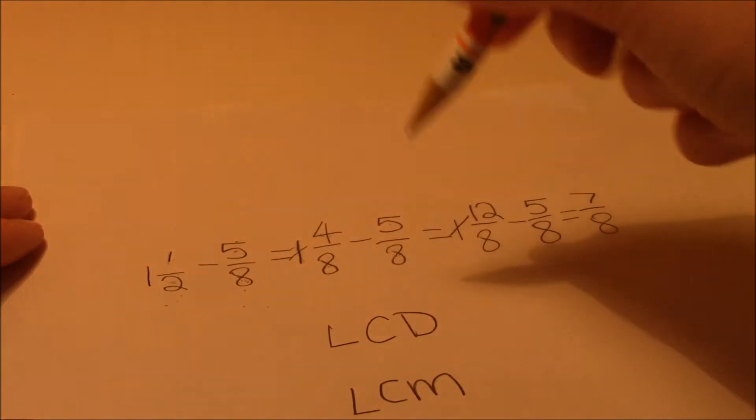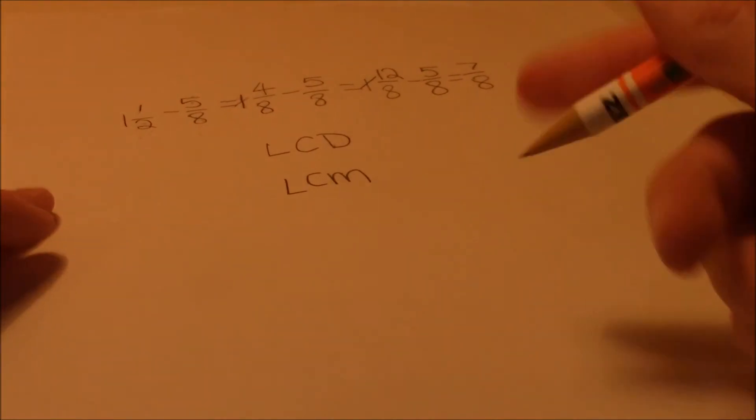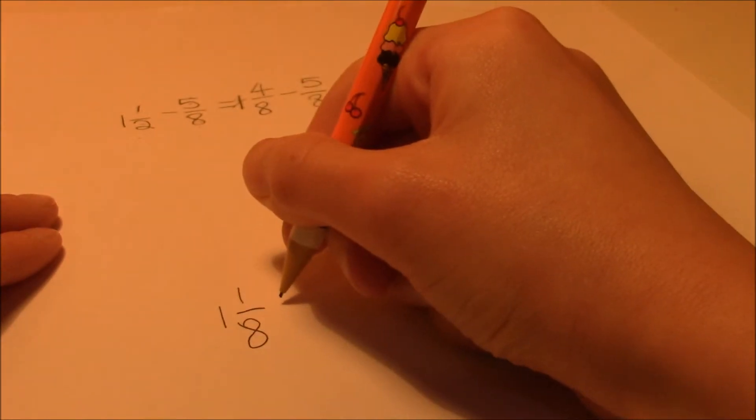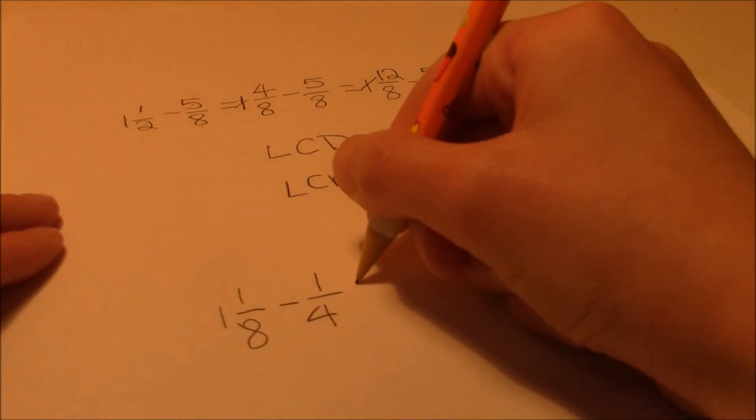And then you put it on the next thing. So, let's do a new question, how about 1 and 1 over 8 by 1 fourth.